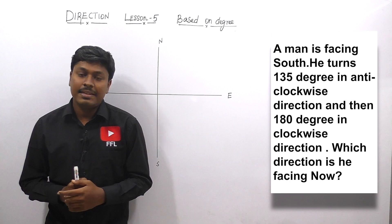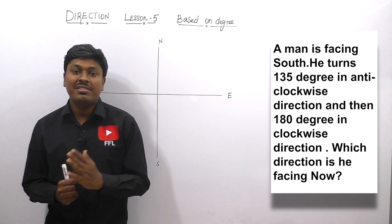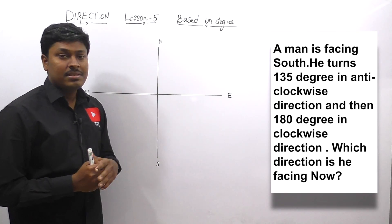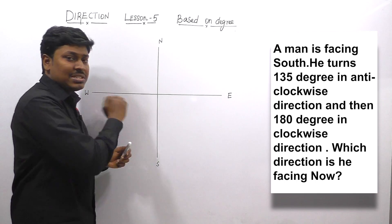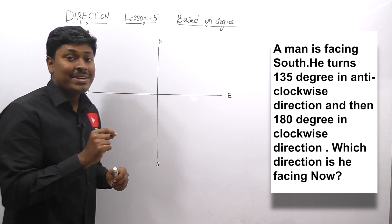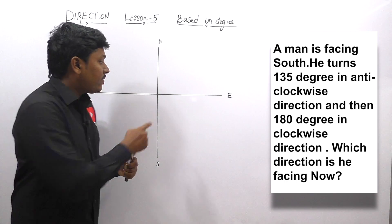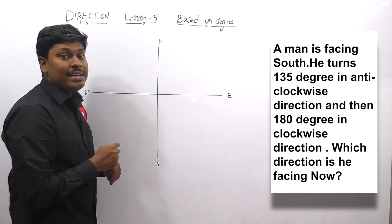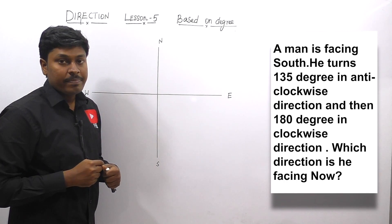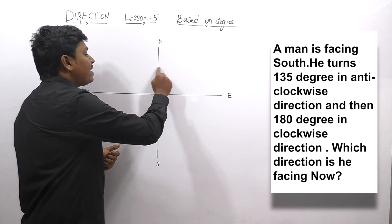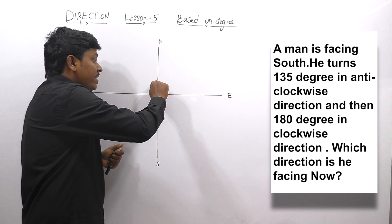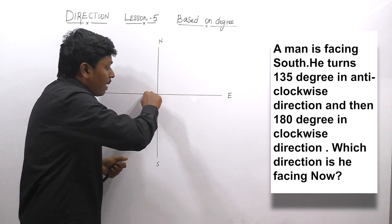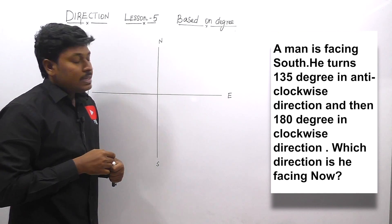Let me move on to the first question on Lesson 5. This lesson is based on the concept called degree. Everyone knows that this is north, south, west, and east, and this center point is called a fixed point or crossing. The angle between north and east is 90°, east and south is 90°, south and west is 90°, and northwest is 90°. The angle between west and east is 180°, north and south is 180°, and the complete circle is 360°.